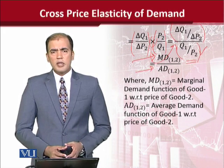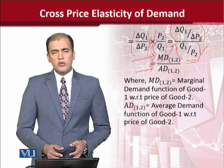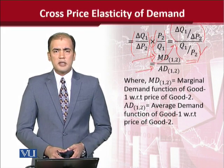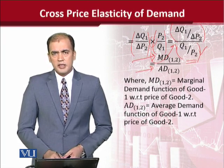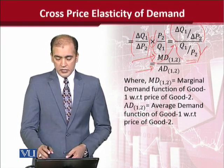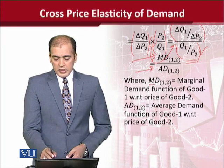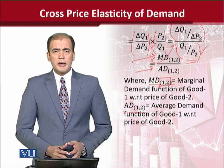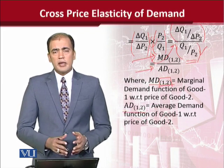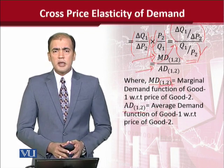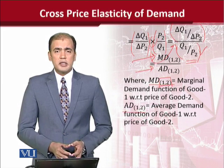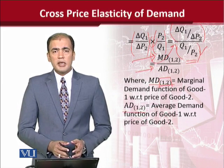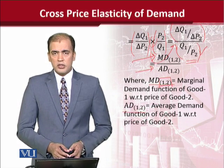Now we come to the point where we shall apply partial derivatives in order to find the answer for cross price elasticity of demand. The subscripts 1 and 2 are showing good 1 and good 2, where good 1 is used for its quantity and good 2's price is used in the calculations.